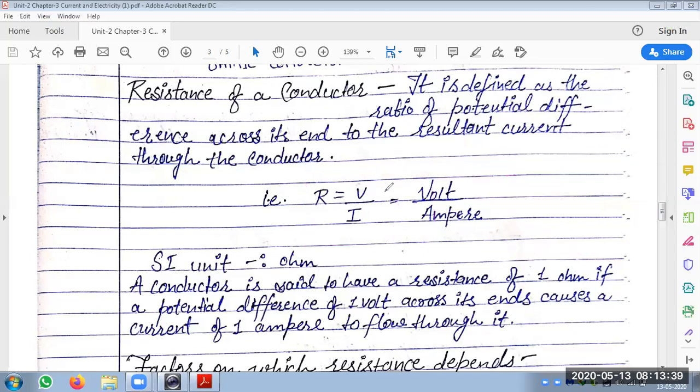The potential unit is volt. Current is a fundamental physical quantity and that is measured in amperes. So resistance unit is volt per ampere, which is called ohm.